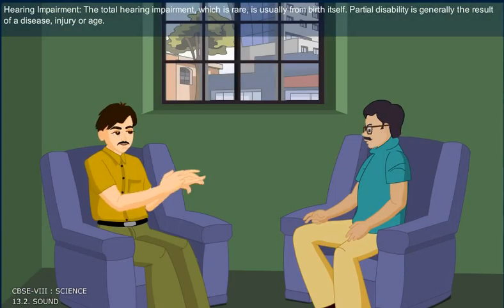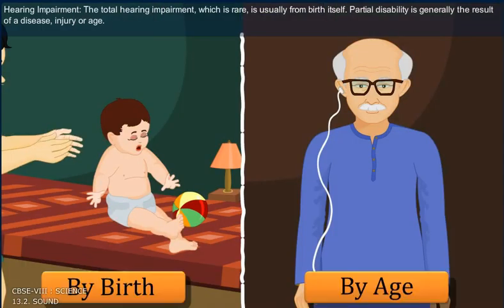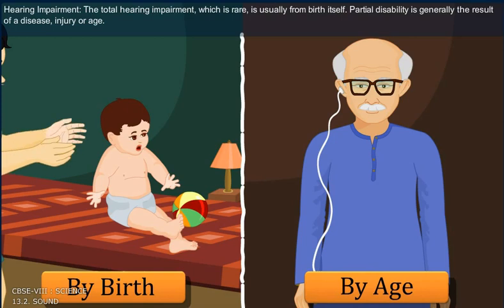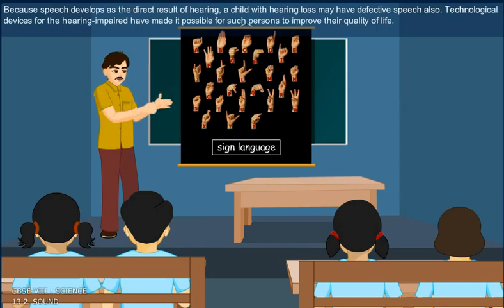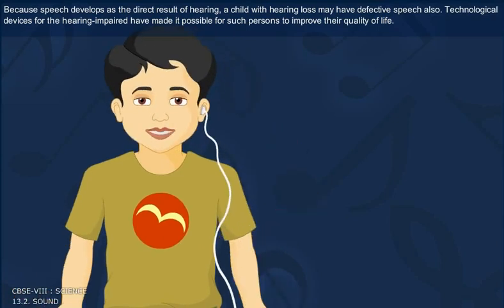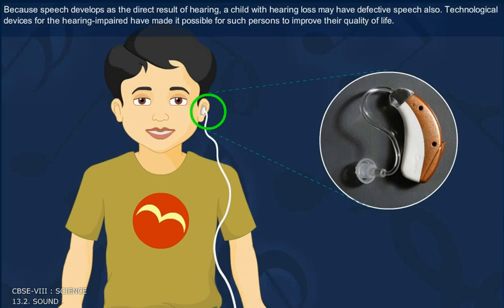Hearing Impairment. Total hearing impairment, which is rare, is usually from birth itself. Partial disability is generally the result of a disease, injury or age. A child with impaired hearing needs to take special care. By learning sign languages, such children can communicate effectively. Because speech develops as the direct result of hearing, a child with a hearing loss may have defective speech as well. Technological devices for the hearing impaired have made it possible for such persons to improve their quality of life.